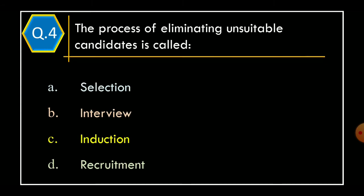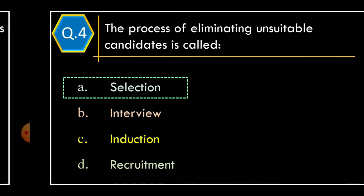Question 4. The process of eliminating unsuitable candidates is called. Option A: Selection. Option B: Interview. Option C: Induction. Option D: Recruitment. The correct option is Option A: Selection.